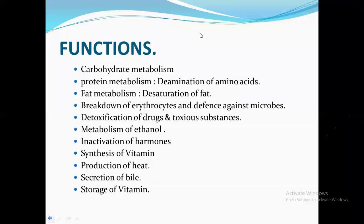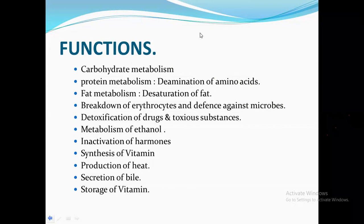Bilirubin metabolism: the liver plays a significant role in the breakdown of heme. Hemolysis takes place in multiple locations throughout the body, including the liver, spleen, and bone marrow. The liver also plays a role in thyroid hormone function as the site of deiodination of T4 to T3. Finally, the liver manages the synthesis of nearly every plasma protein in the body, including albumin, binding globulins, protein C, protein S, and all clotting factors of the intrinsic and extrinsic pathways.